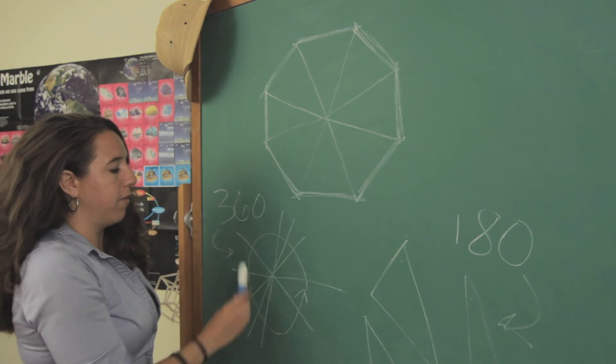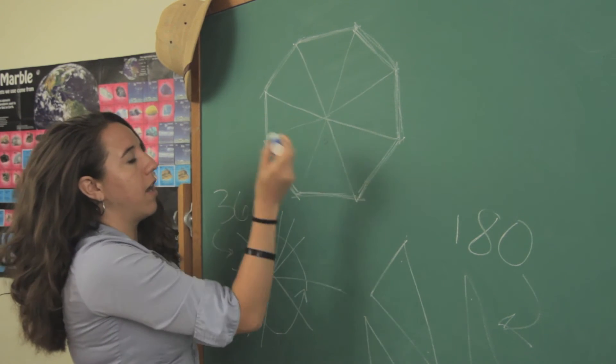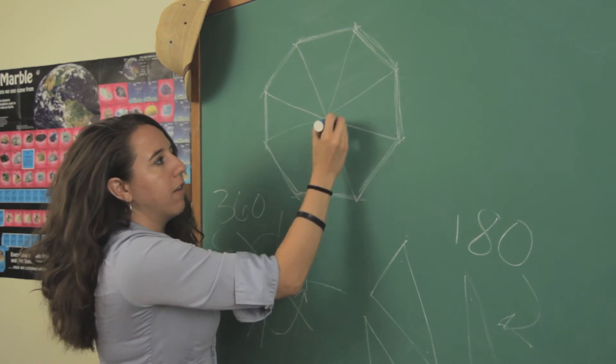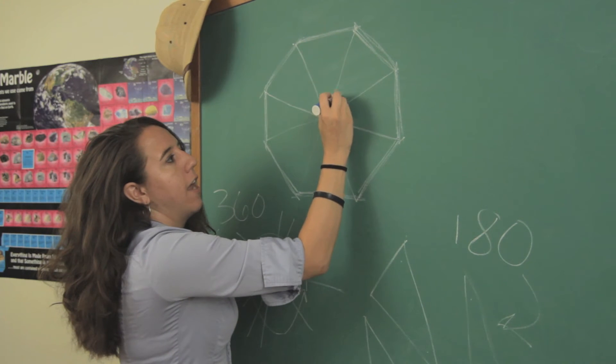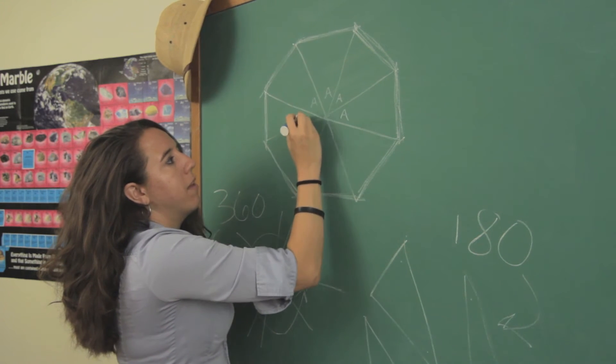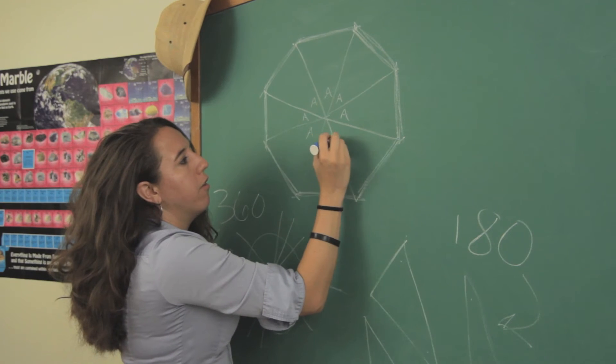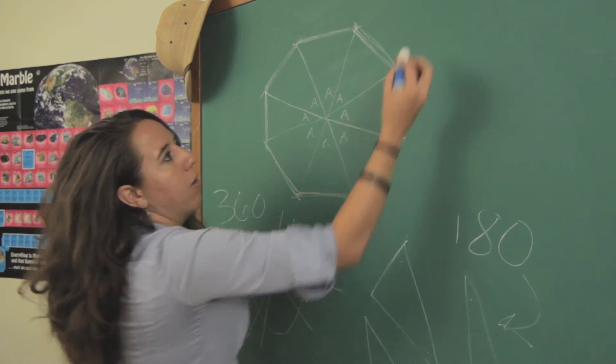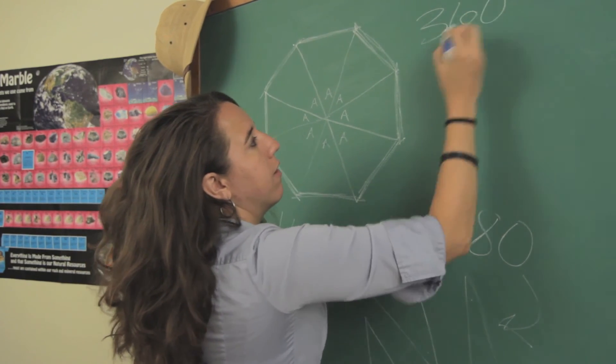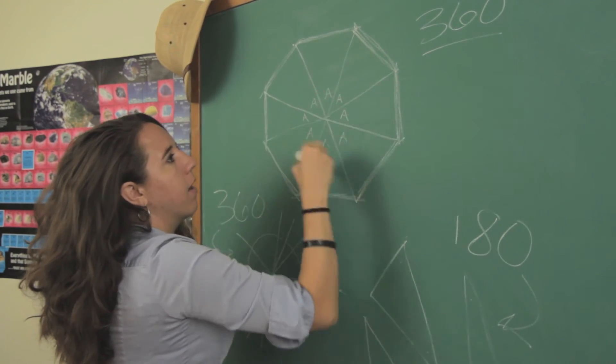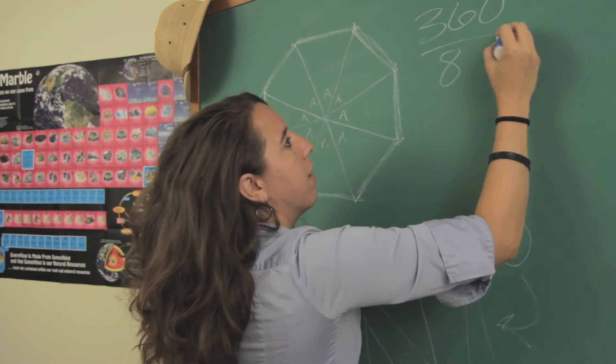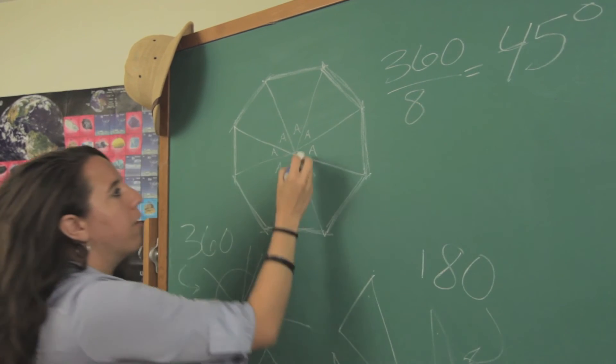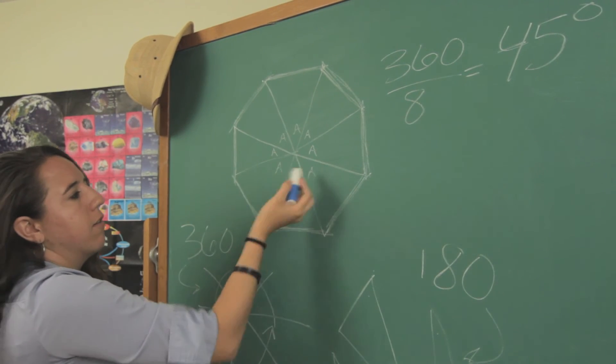With this principle, we know that all of these are going to add up to 360, but we already know that they're all the same triangle, so all of these angles are the same. We can just call it A. We basically have eight angles that are all the same, and they all add up to 360. So, we basically just need to take 360 and divide it by eight, and we get 45. We know that every single one of these angles is 45 degrees.